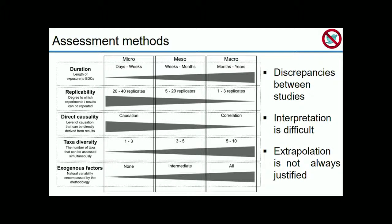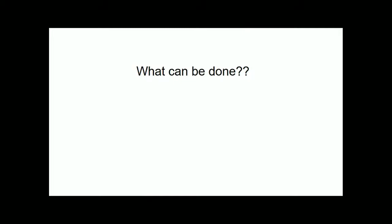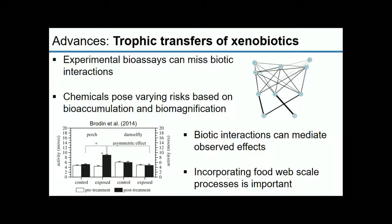More to the point is what is being done — within recent years there's been a significant advance, and we've started to incorporate more complex ecological concepts to better understand effects within natural systems. Experimental bioassays can miss biotic interactions. Chemicals also pose varying risks based on the extent to which they bioaccumulate and biomagnify within freshwater food webs. Biotic interactions such as competition and predation can also influence the observed effects.